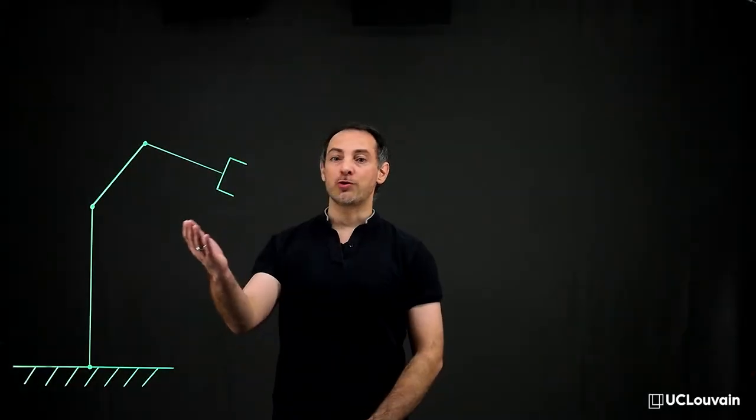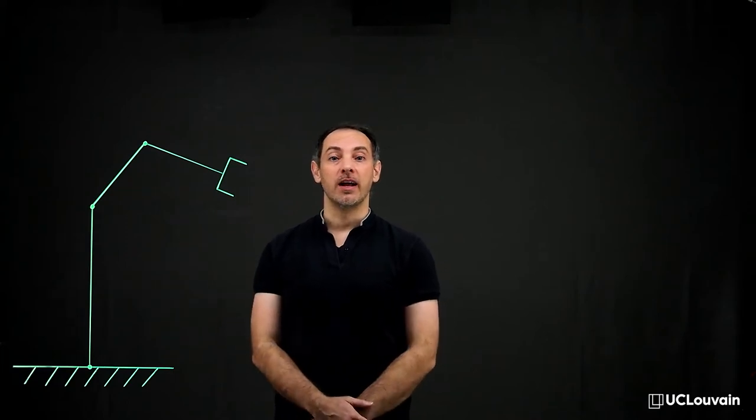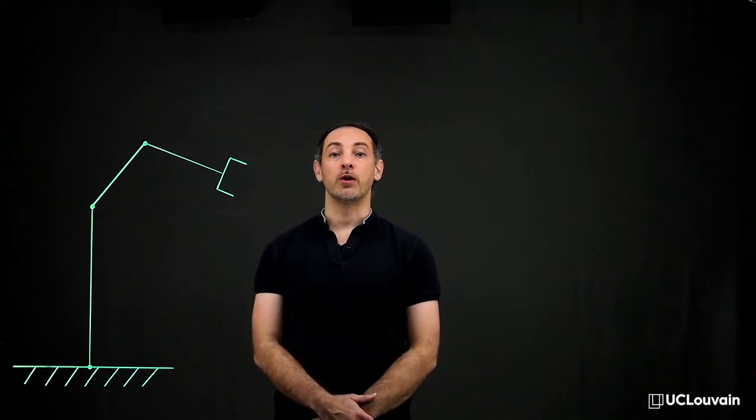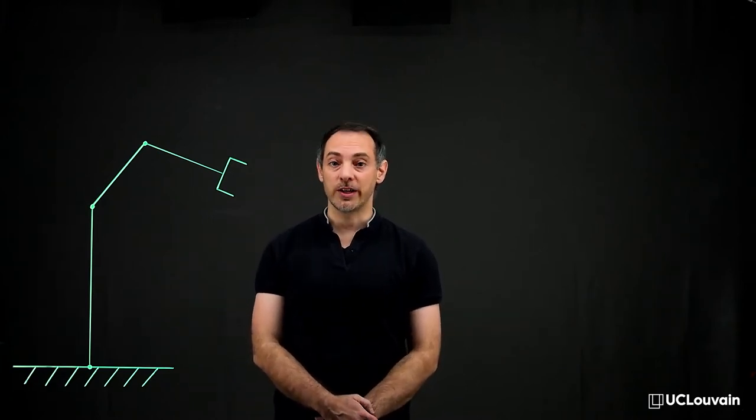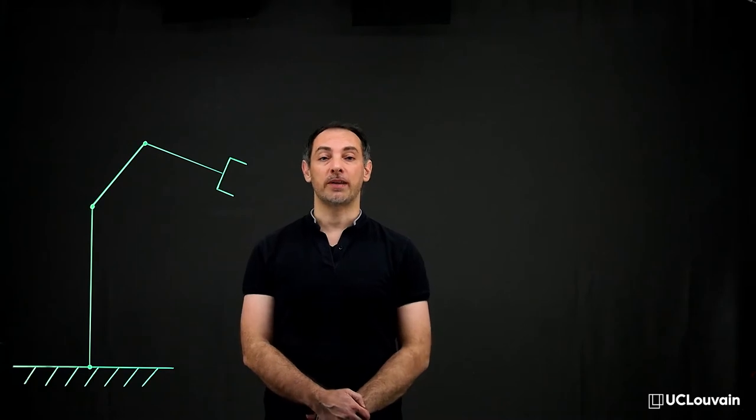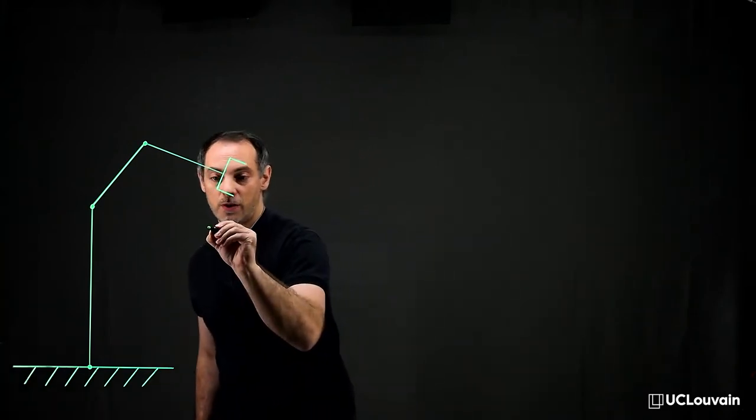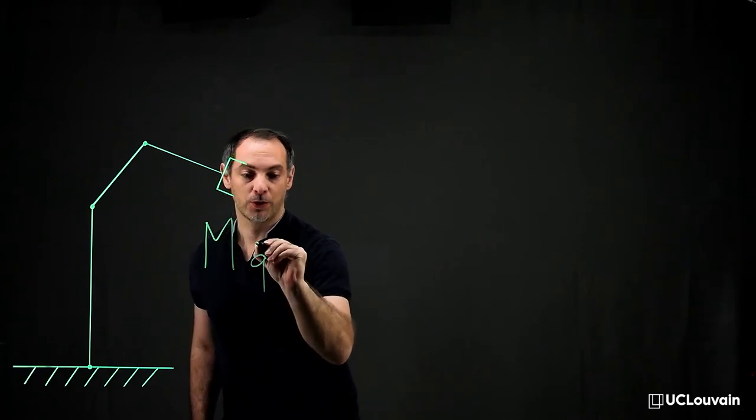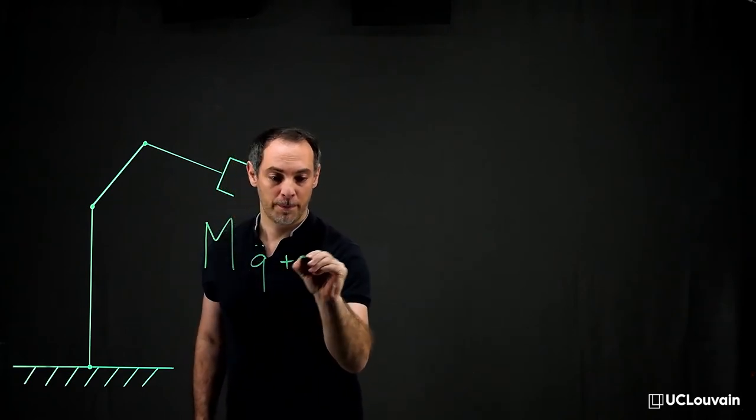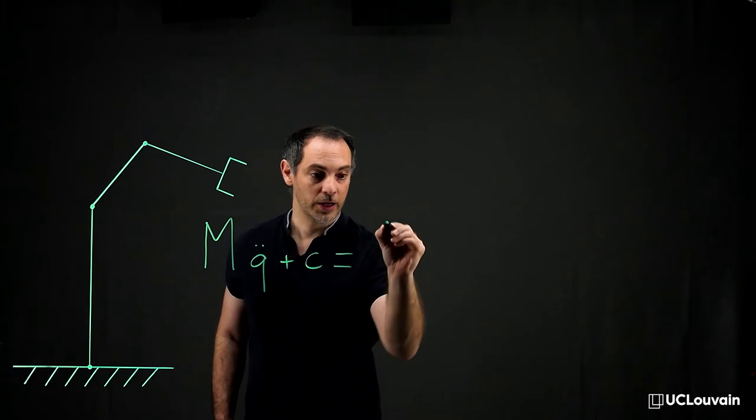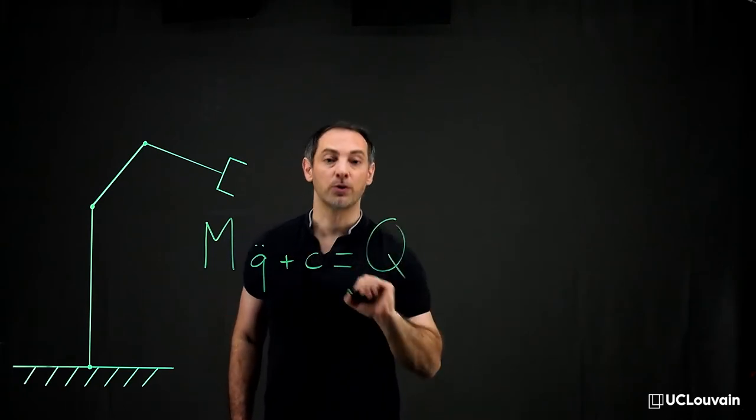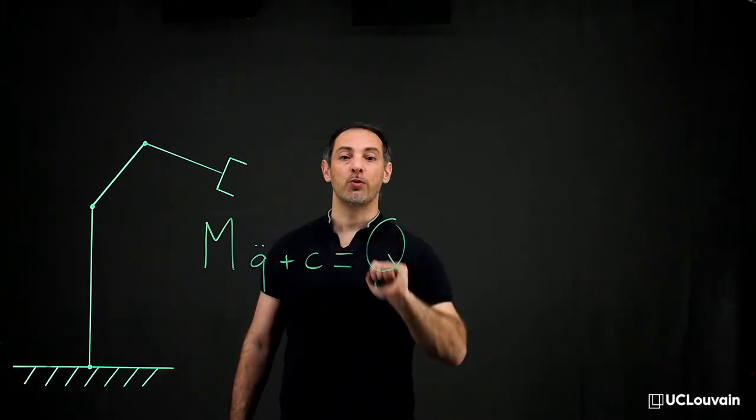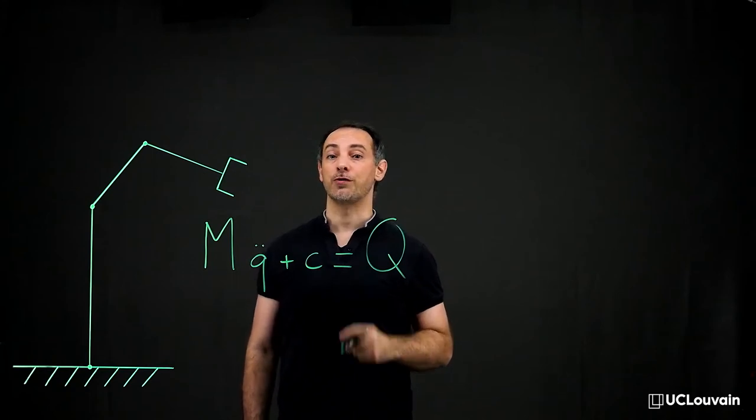For a tree-like multibody system, let us remind the equations of motion. For the direct dynamics, the unknowns were the accelerations q̈, obtained by solving this system of equations: Mq̈ + c = Q, in which Q represents the generalized joint forces.